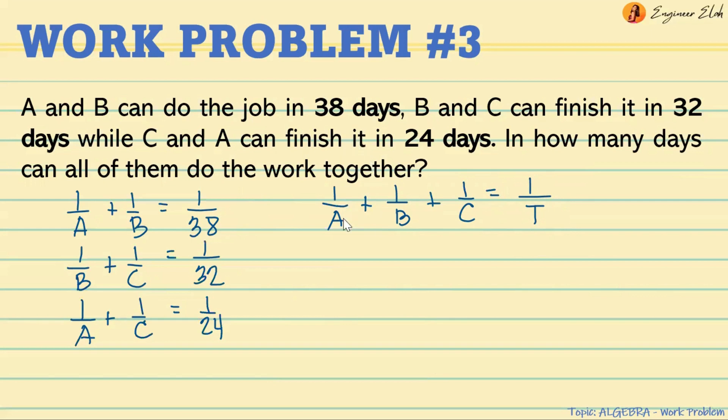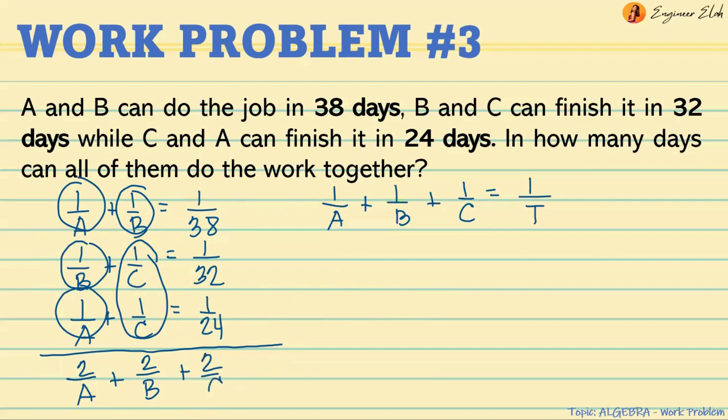We're not given directly the individual time to finish the job alone, but we're given the combinations. So we have three equations. We can combine these equations to form another equation by adding them. That will be 2 over A plus 2 over B plus 2 over C equals 1 over 38 plus 1 over 32 plus 1 over 24. When we add the right side, the answer is 181 over 1824.